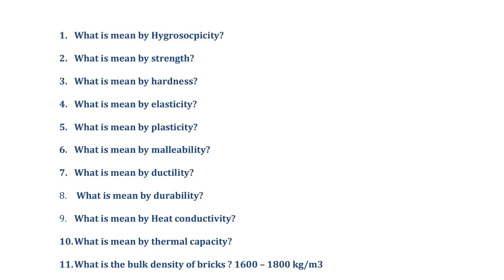The sixth question is: what is meant by malleability? Malleability is a physical property of materials that defines the ability to be hammered, pressed, or rolled into a thin sheet without breaking or tearing. Simply, it is the ability of a material to be rolled into a thin sheet without any breaking. This is called malleability.